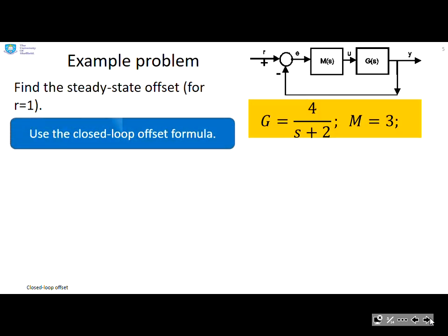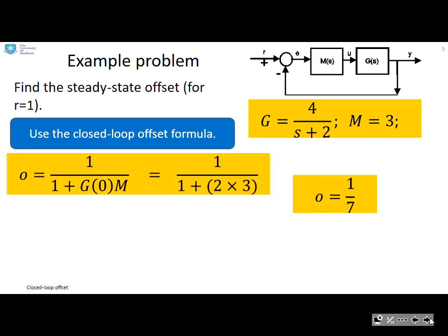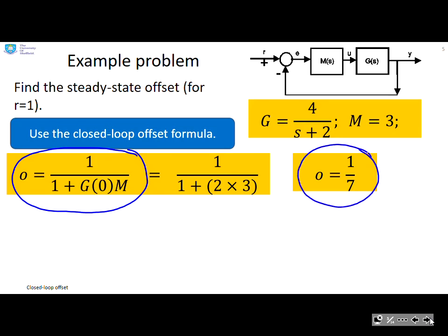An example problem. Find the steady state offset for the following system. And we're going to use the standard closed loop offset formula. So there it is. There's our offset formula. I've simplified it here because I know there's no integrator. And I plug in the numbers and I get the offset is 1 over 7. You can see there's no integrator in G and there's no integrator in M. So I expect there to be an offset. And indeed there is.